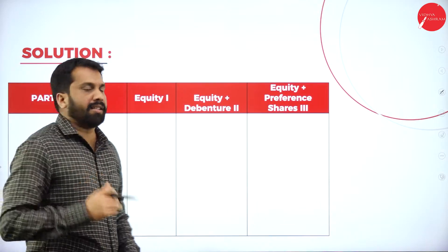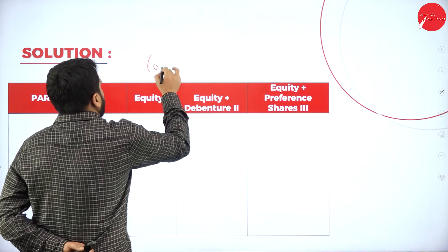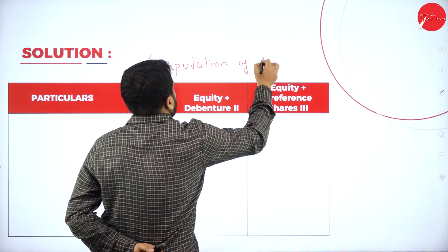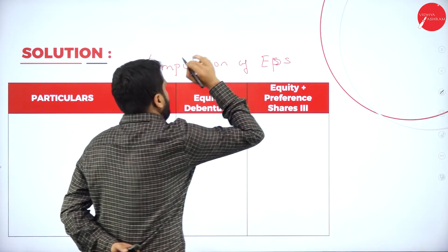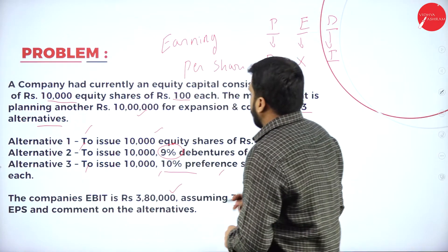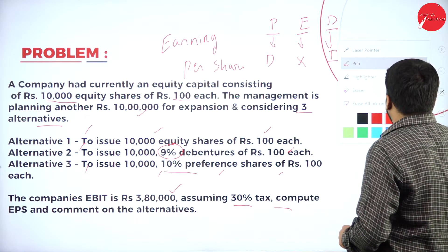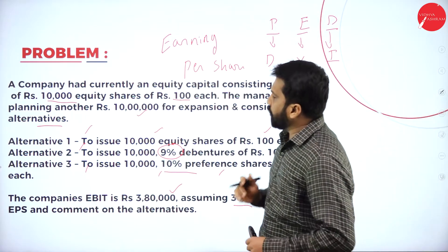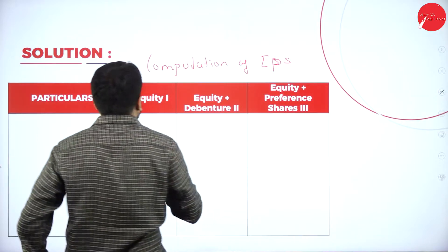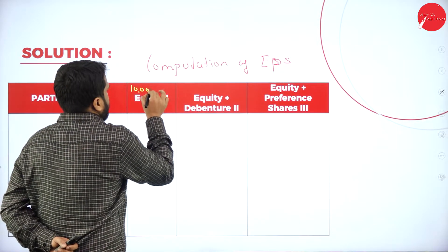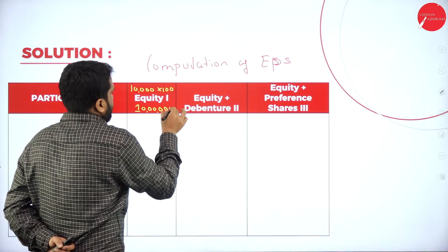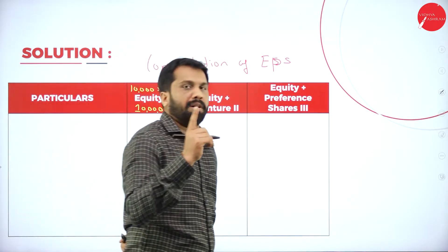Now, the solution part. The heading must be 'Computation of Earning Per Share.' We have Alternative 1, Alternative 2, and Alternative 3 — a total of three alternatives. For Alternative 1, we have 10,000 equity shares of Rs. 100 each, which is 10 lakh.